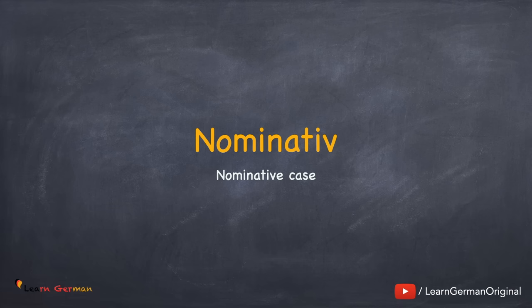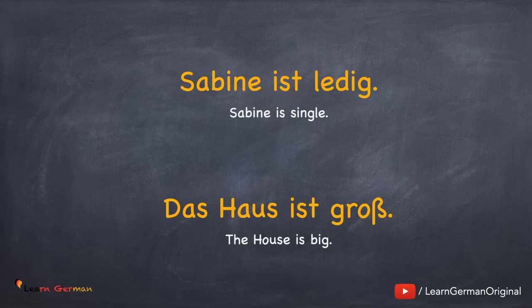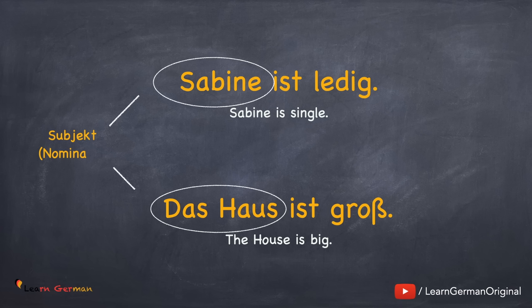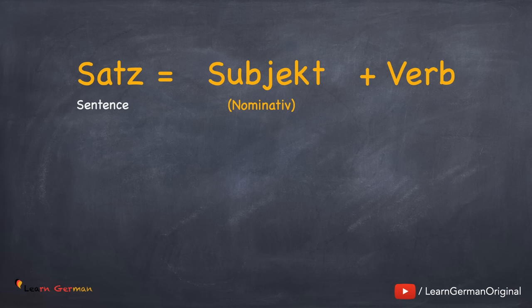Nominativ. The most important thing in a sentence to understand is Nominativ. Let's look at two examples. The subject in both these sentences is the nominative case. As we have already discussed in the previous chapter, the subject conjugates the verb. In this case, the verb is ist. To understand this better, a sentence — Satz — is made up of Subjekt plus verb. Subjekt is always nominative and the verb depends on this Subjekt.